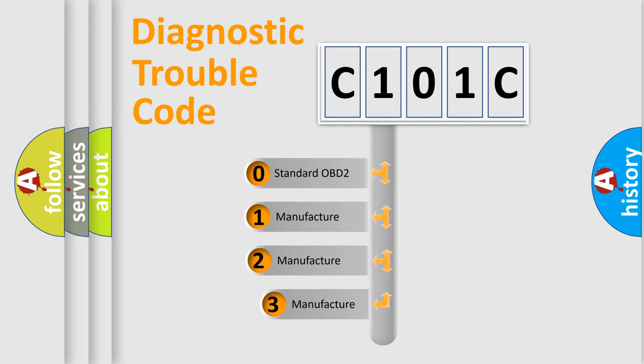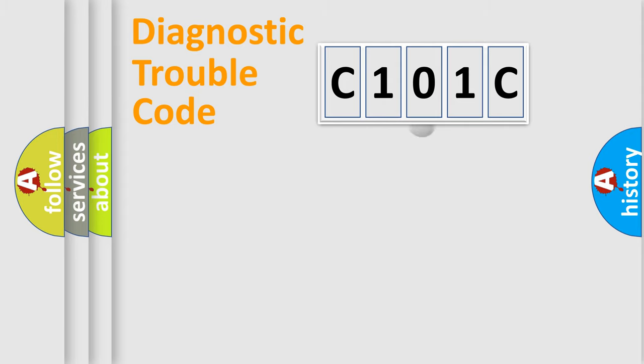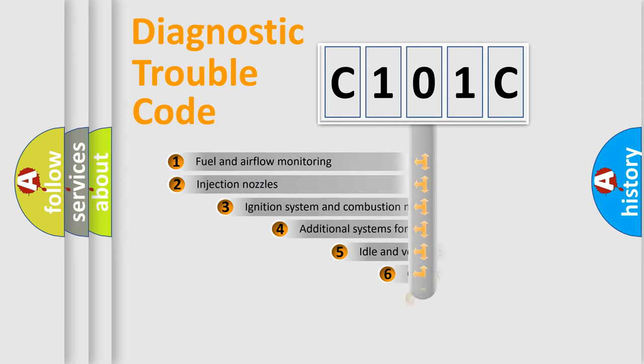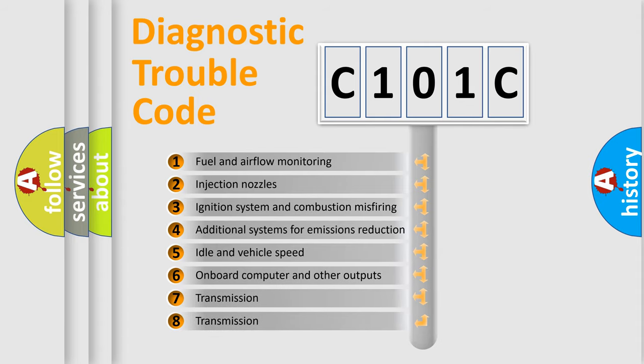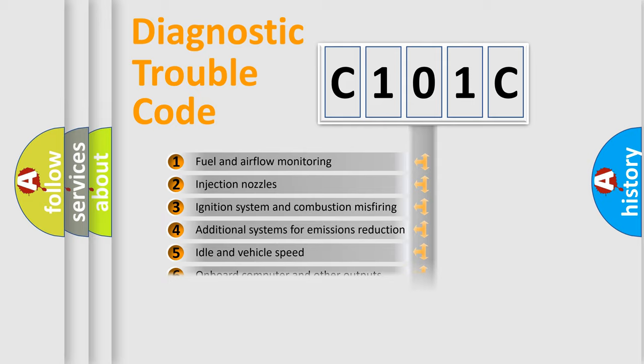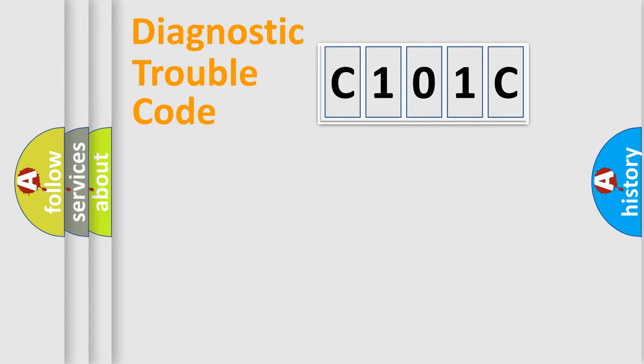If the second character is expressed as zero, it is a standardized error. In the case of numbers 1, 2, 3, it is a manufacturer-specific expression of the car error. The third character specifies a subset of errors. The distribution shown is valid only for the standardized DTC code.